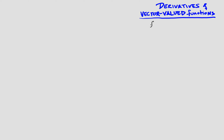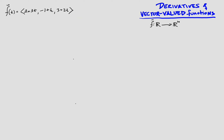A vector-valued function is just some function that takes real numbers as its input and gives out numbers from some higher dimensional space, Rⁿ. We saw examples of vector-valued functions in the previous lecture, like this one, which you should now be able to recognize as being the graph of a line, since all three component functions are linear.